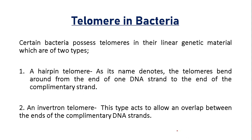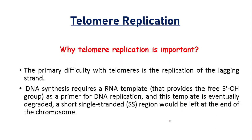Certain bacteria possess telomeres in their linear genetic material, which are of two types. The first is a hairpin telomere, where the telomere bends around from the end of one DNA strand to the end of the complementary strand, making a hairpin loop. The second is an invertron telomere, where this type of telomere allows an overlap between the ends of the complementary DNA strands, so the two DNA strands overlap each other to make an invertron.